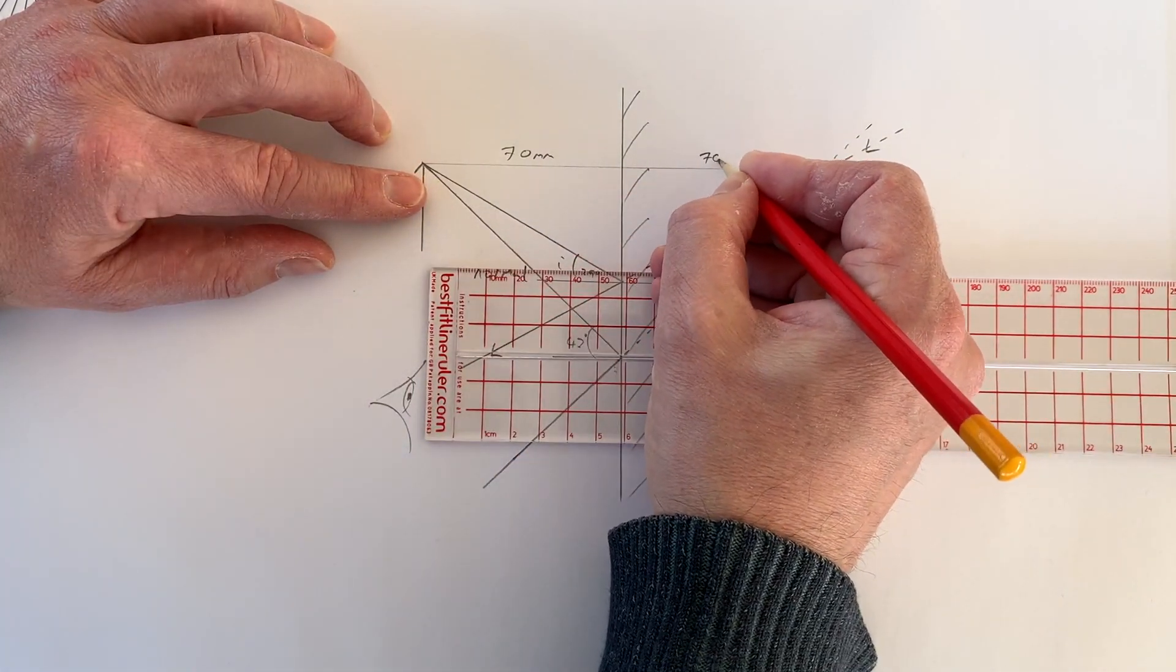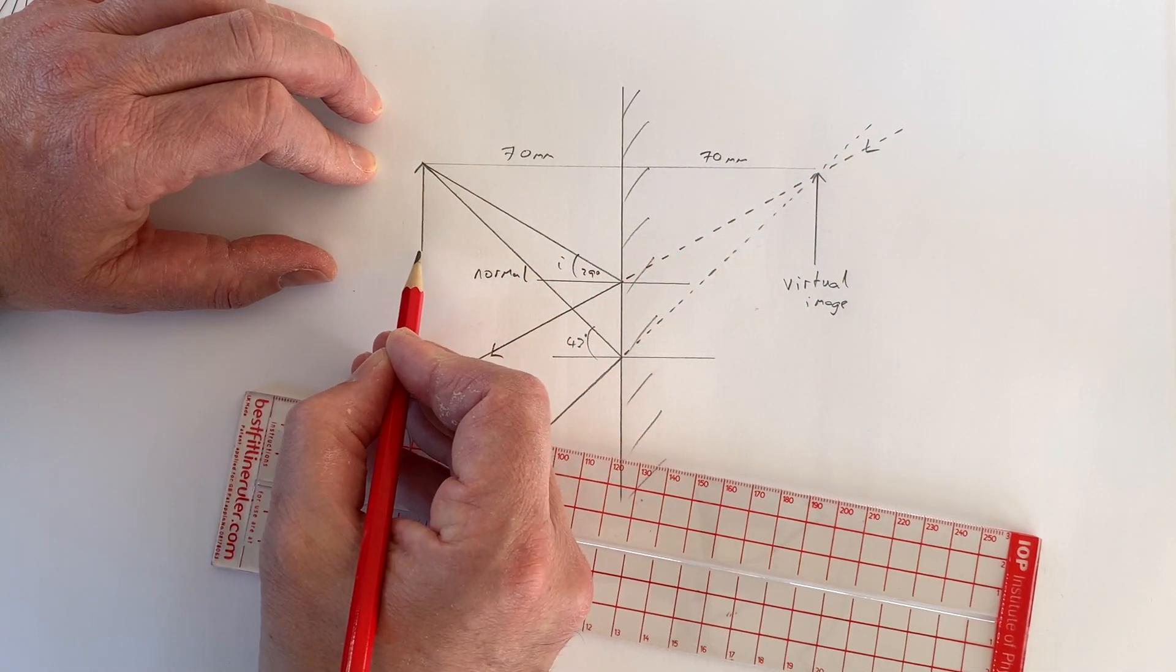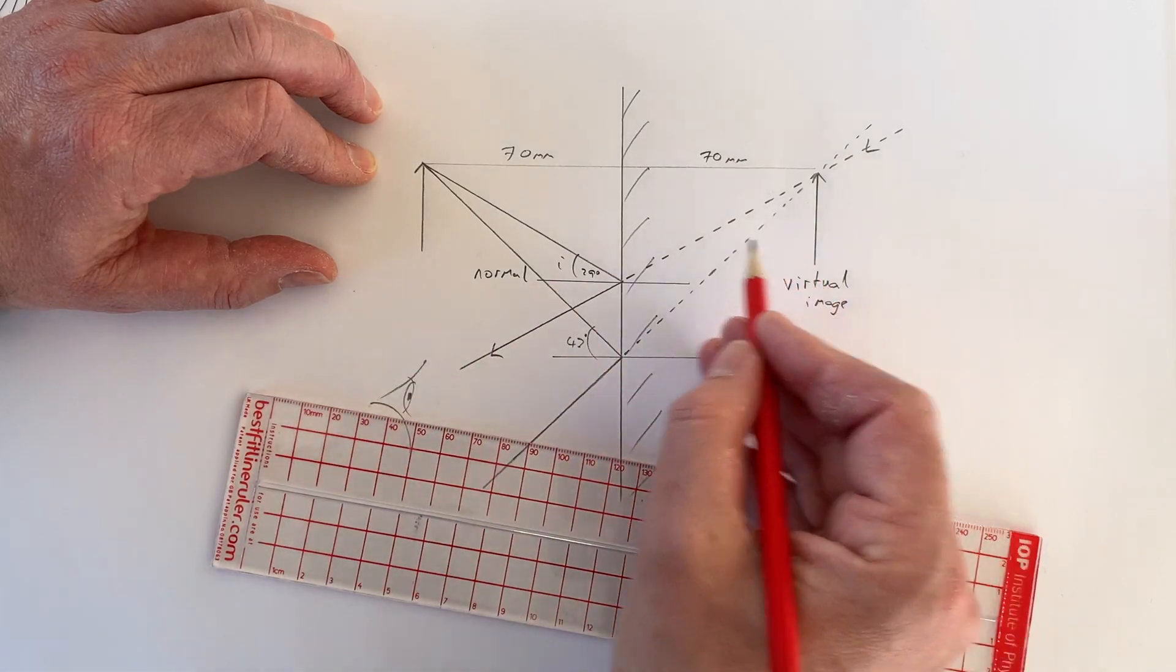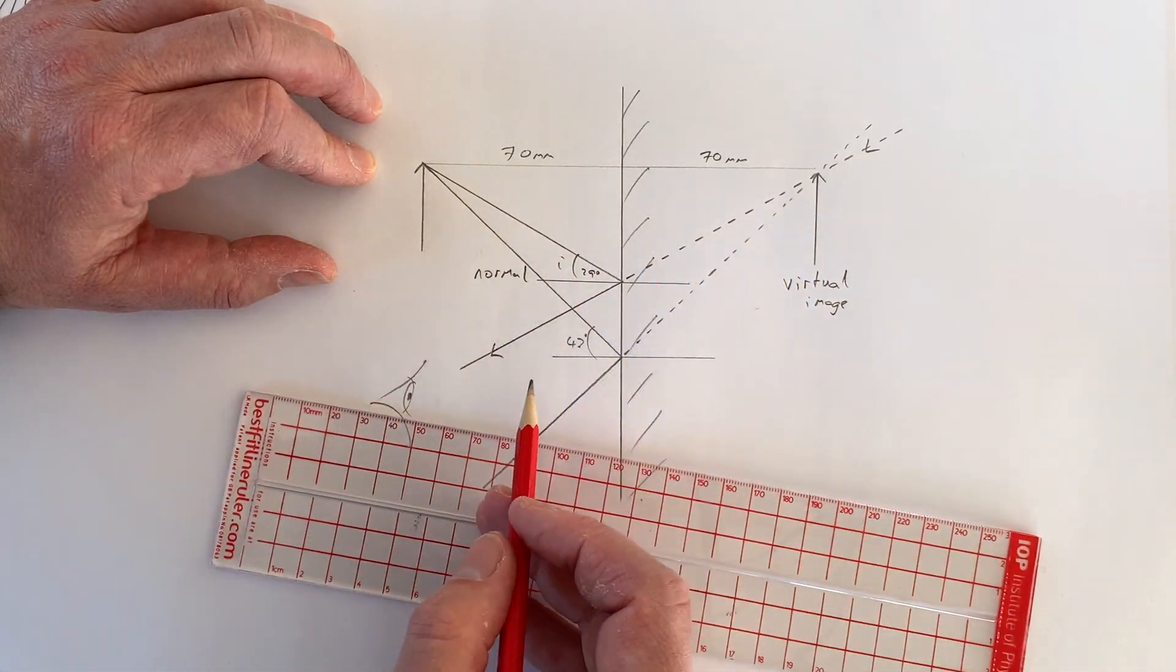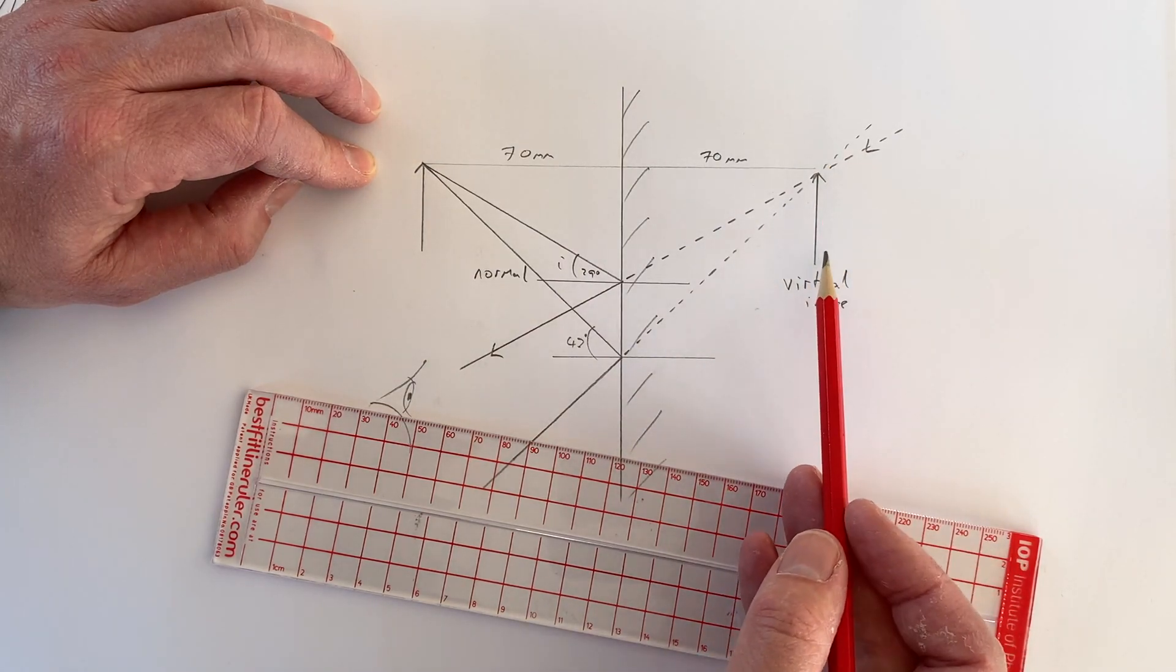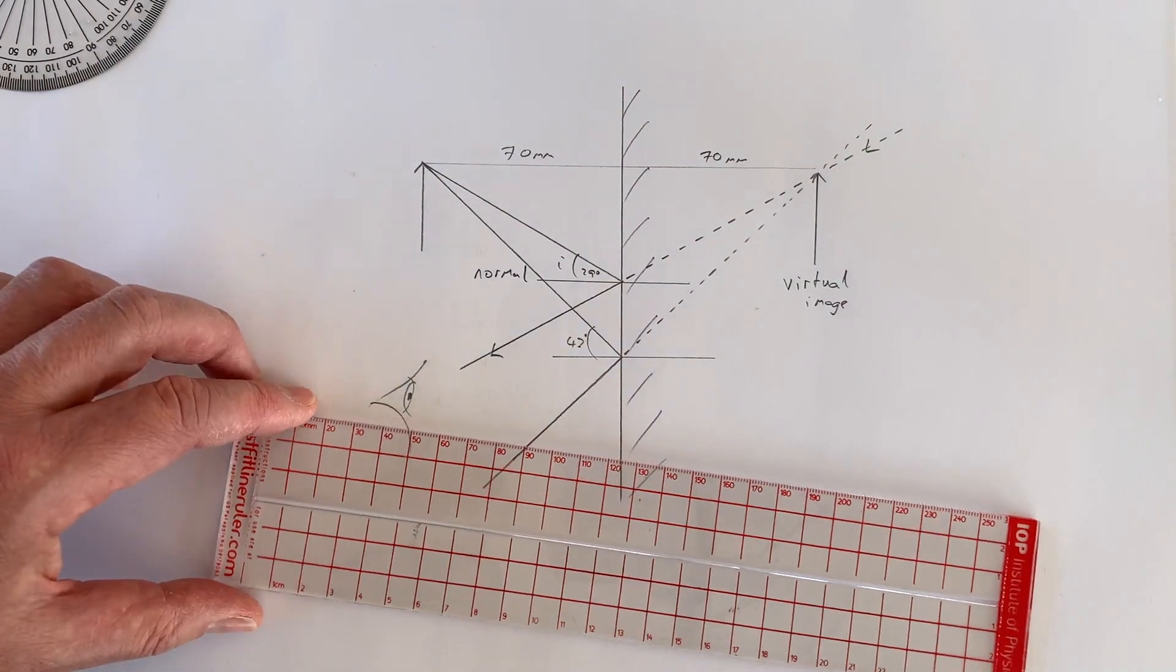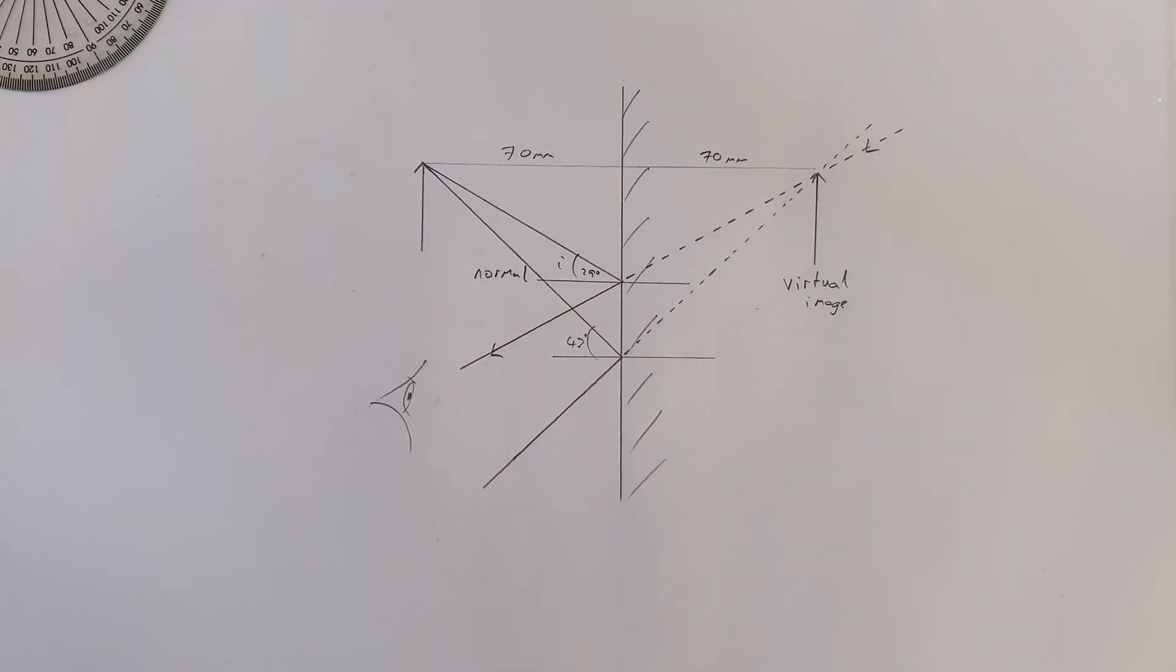Another thing that I can't show using this diagram, but I could if I drew rays coming from the bottom of the object, is that the two images are the same size, and that also the image is the correct way around. It's not inverted, it's the same way around as the object. There we go, that's our ray diagram.